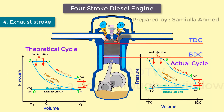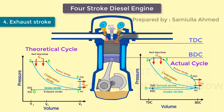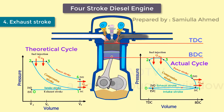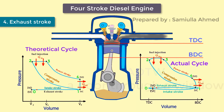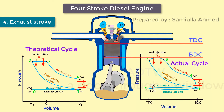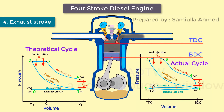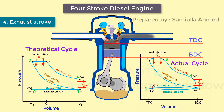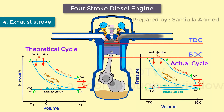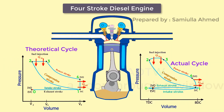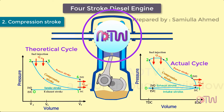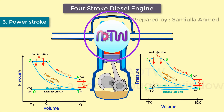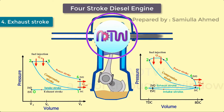In the exhaust stroke, the piston moves from bottom dead center to top dead center, and the cycle passes from point four to zero. The exhaust valve is open while the piston pushes the exhaust gases out of the chamber. At the end of this stroke, the crankshaft has completed a second full 360-degree revolution. This is how the diesel engine works.